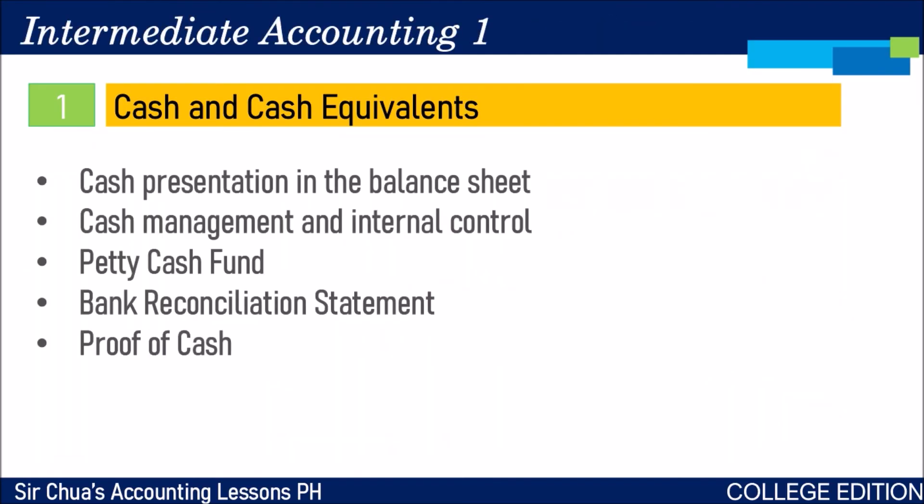For cash and cash equivalents, we will talk about how to properly present cash and what cash items should be reported in the balance sheet. We will also tackle cash management techniques and internal control — how to prevent theft of cash — and then the petty cash fund, bank reconciliation statement, and the four-column bank reconciliation statement known as the proof of cash.